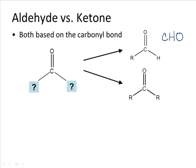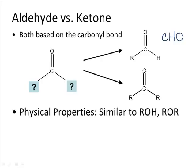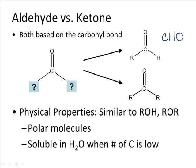Physically, aldehydes and ketones are very similar to each other, and also similar to alcohols and ethers, because they all contain the polar carbon-to-oxygen bond. Because of this, aldehydes and ketones tend to be polar molecules. Like ethers, they are not capable of hydrogen bonding with themselves, but they can interact with other hydrogen bonding molecules. The more carbons they contain, the less polar they effectively act — so they can be soluble in water if they don't contain many carbons, or more soluble in organic solvents if they do.